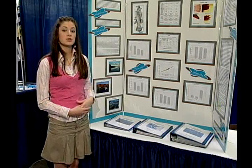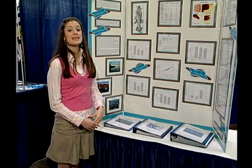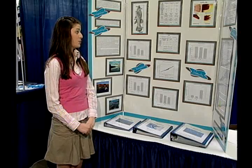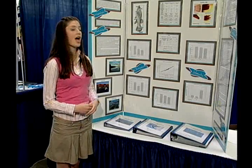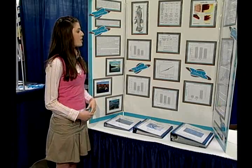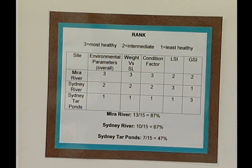For my final conclusions and analysis, I did a rank analysis. I tallied the total values for each of the estuaries, divided by the total number possible, and then multiplied by 100 to receive a percentage. The final results show that Myra River received an 87%, Sydney River a 67%, and the Sydney Tarpons a 47%.